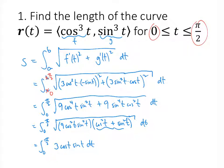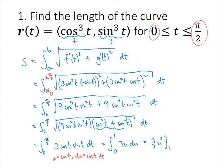That's a much easier integral than it looked like it was going to be. We do a quick substitution: u = sin(t), du = cos(t) dt. When we change the bounds, we get the integral from 0 to 1 of 3u du. That's (3/2)u² evaluated from 0 to 1, and we get 3/2.